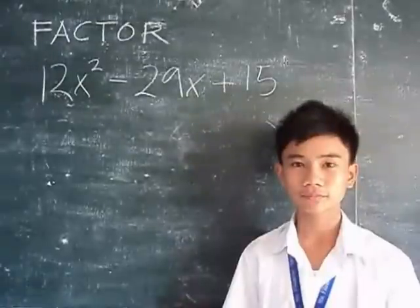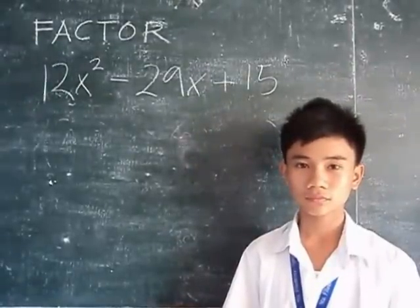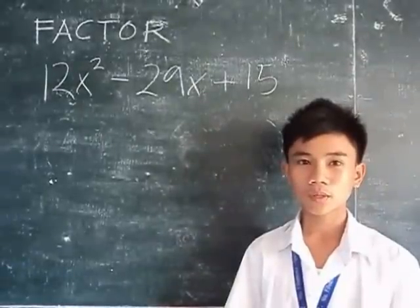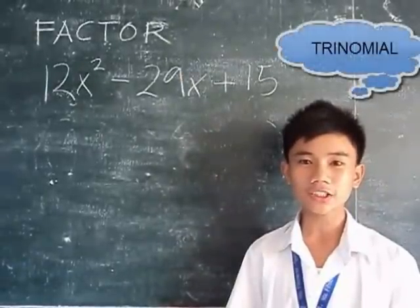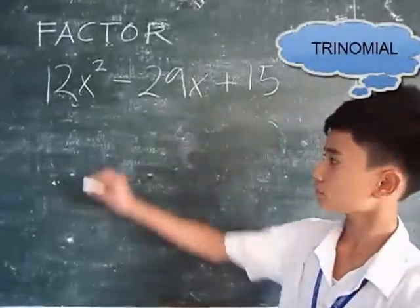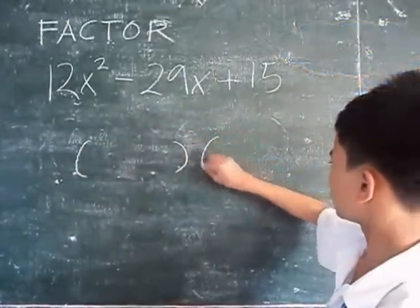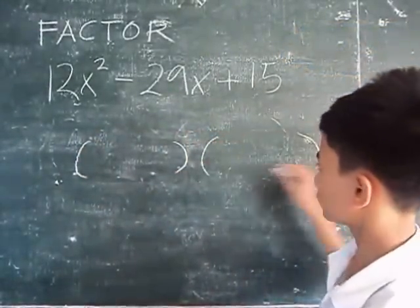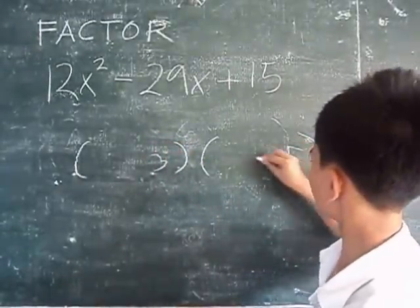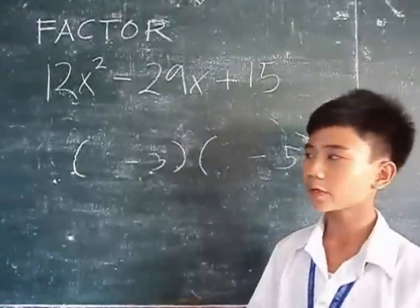Factor 12x² minus 29x plus 15. To factor this trinomial, start by factoring 15, then factor 12x².